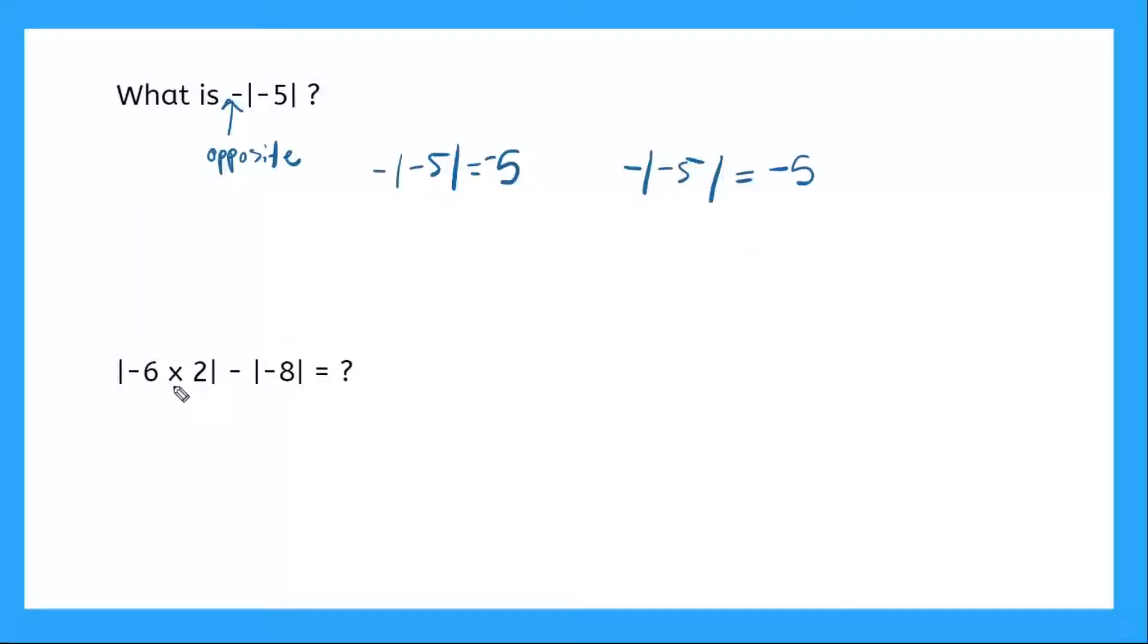Okay, this next one here. I have absolute value bracket here, expression subtracting from another one. Okay, so I have two things I need to do first. I need to figure out what this is equal to, I need to figure out what this is equal to, and then I can subtract them. So negative 6 times 2, what is that? Negative 6 times 2, a negative times a positive is going to be a negative.